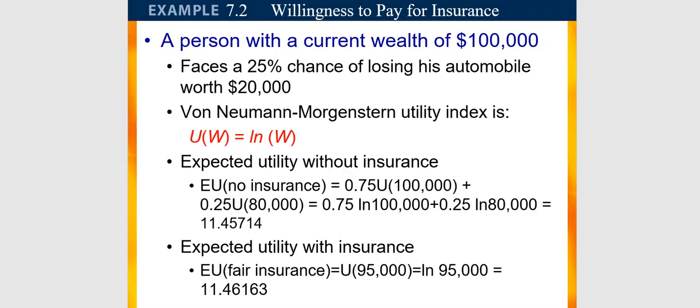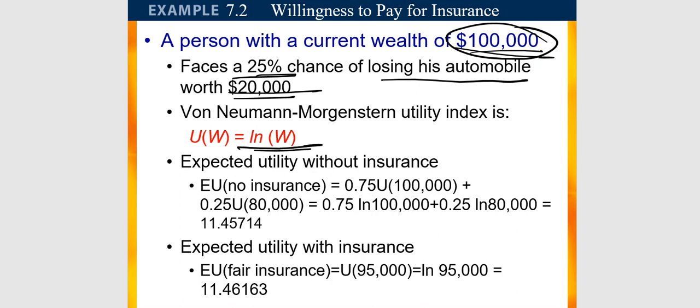Consider a person with current wealth of $100,000. There is a 25% chance of losing an automobile worth $20,000. Using the von Neumann-Morgenstern utility function from the last video, u(w) equals log of w.